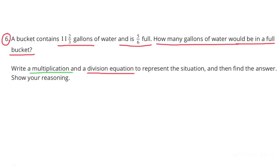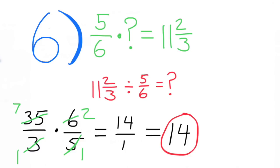Problem 6: A bucket contains 11 2/3 gallons of water and is 5/6 full. How many gallons of water would be in a full bucket? Write a multiplication and a division equation to represent the situation, then find the answer. 5/6 × ? = 11 2/3, or equivalently 11 2/3 ÷ 5/6 = ?. We find the answer by multiplying by the reciprocal of 5/6, representing 11 2/3 as 35/3: 35/3 × 6/5 equals 14.